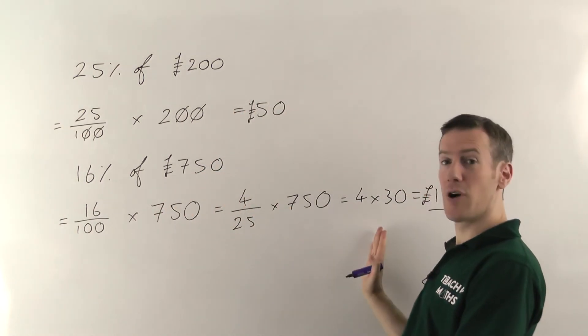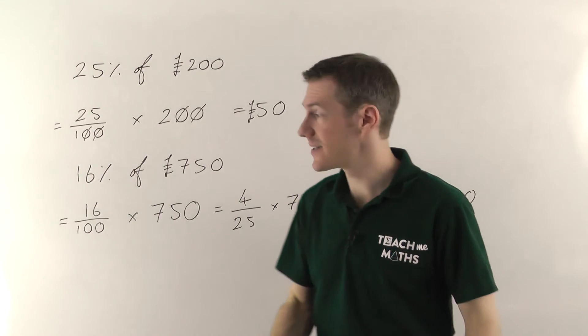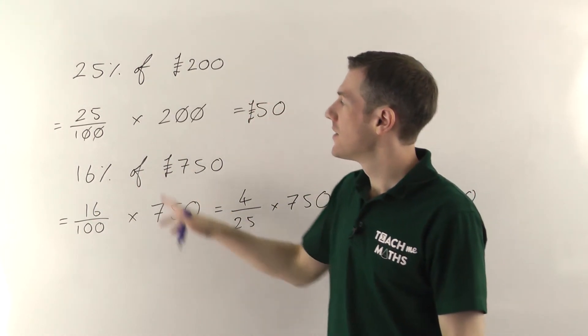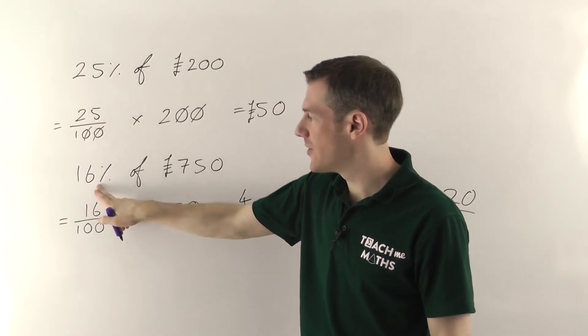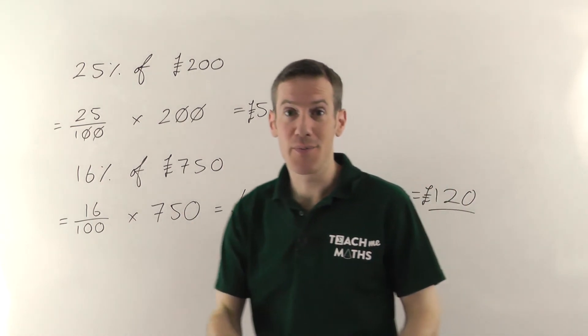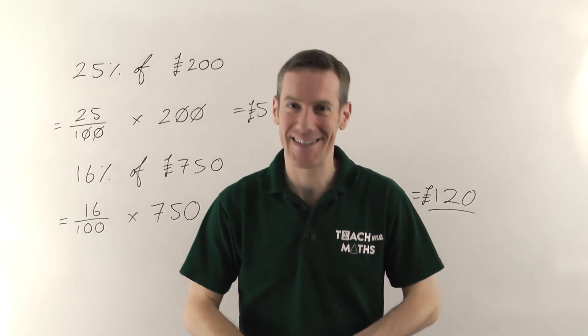So the arithmetic was a little bit more complicated there, but the principle is exactly the same. Whenever you're finding the percentage of an amount, of always means times. Convert the percentage into a fraction over 100 and then just do the arithmetic. My name is Jonathan Hicks and you're watching Teach Me Maths.